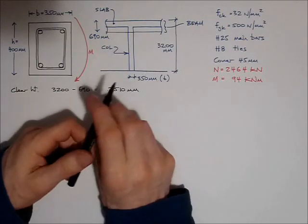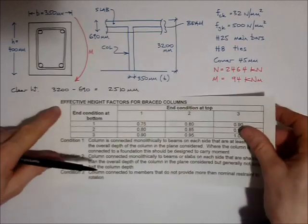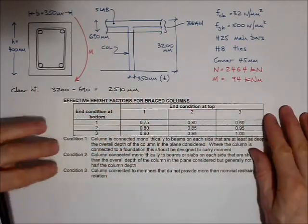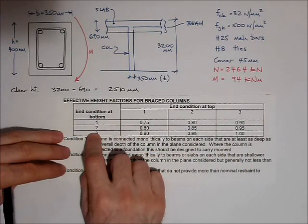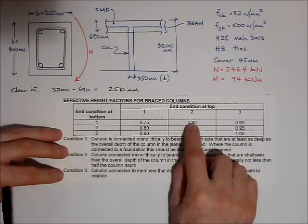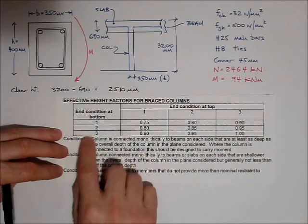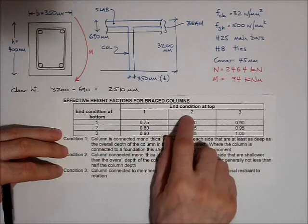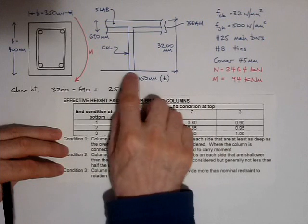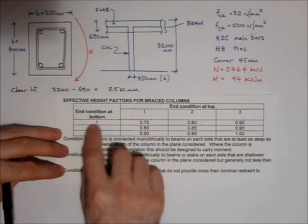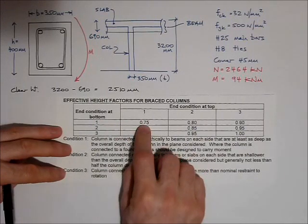From that I can work out the effective height of the column. I have a little table here that tells me that for different end conditions at the top and at the bottom I can apply a different factor to the height of the column. Well, my column is fixed at the top, so that's end condition at the top is 1, that's fixed, and at the bottom it's fixed. I'm assuming it's got deep beams framing into it, top and bottom.